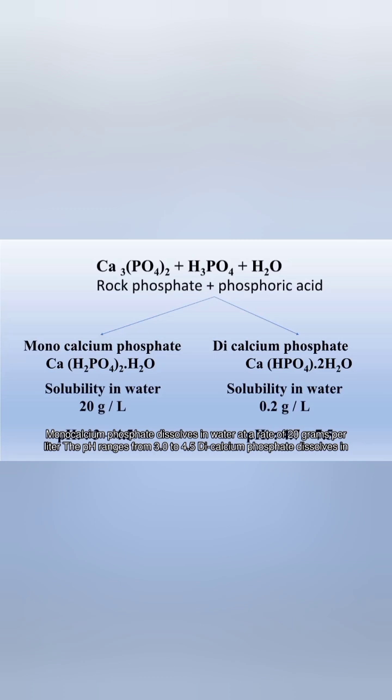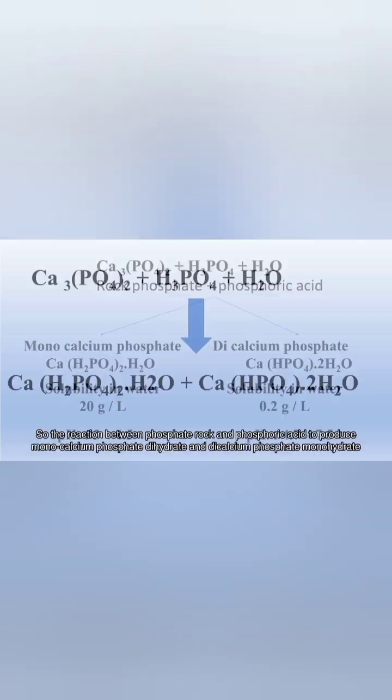The pH ranges from 3.0 to 4.5. Dicalcium phosphate dissolves in water at a rate of 0.2 grams per liter. It can be considered insoluble in water. The pH ranges from 4.7 to 7.5.